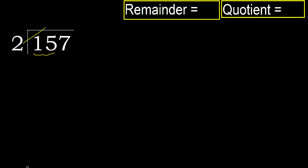2 multiplied by which number is nearest to 15 but not greater? 2 multiplied by 8 is 16, which is greater. Multiplied by 7, 14 is not greater. 15 minus 14 is 1. Next.